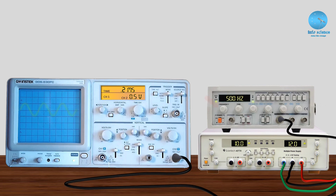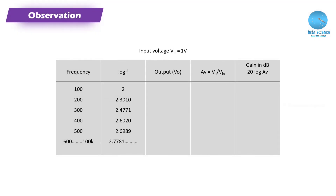The function generator frequency node is adjusted. The signal amplitude is set, then frequency is varied from 100 Hz to 900 kHz to take readings. This is the tabulation process.